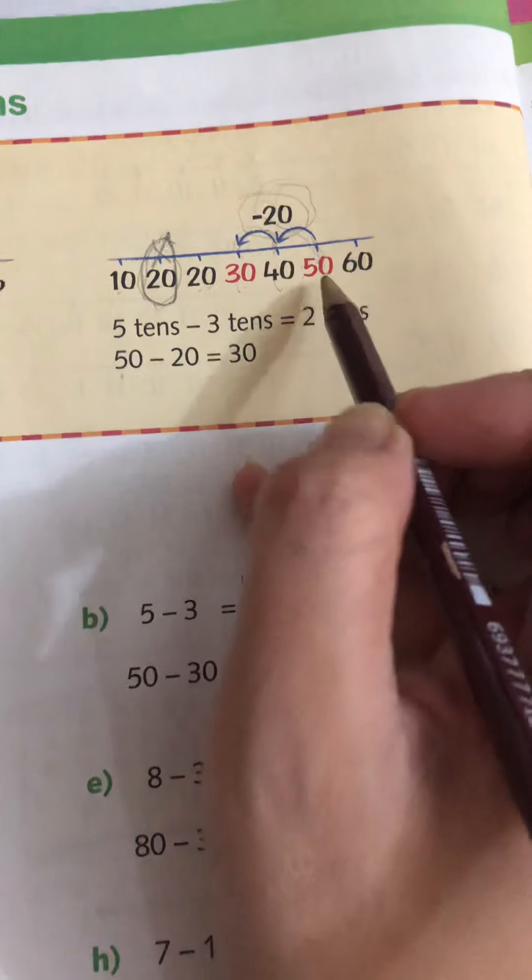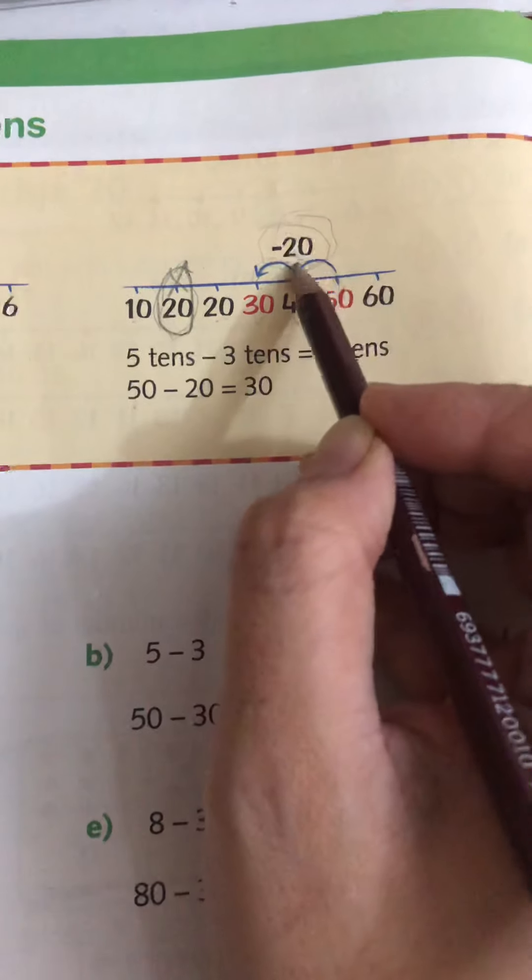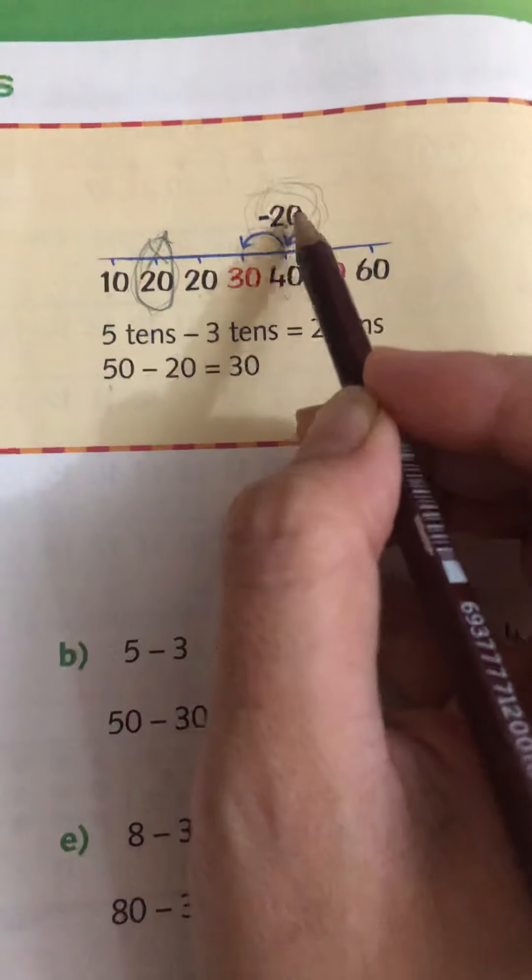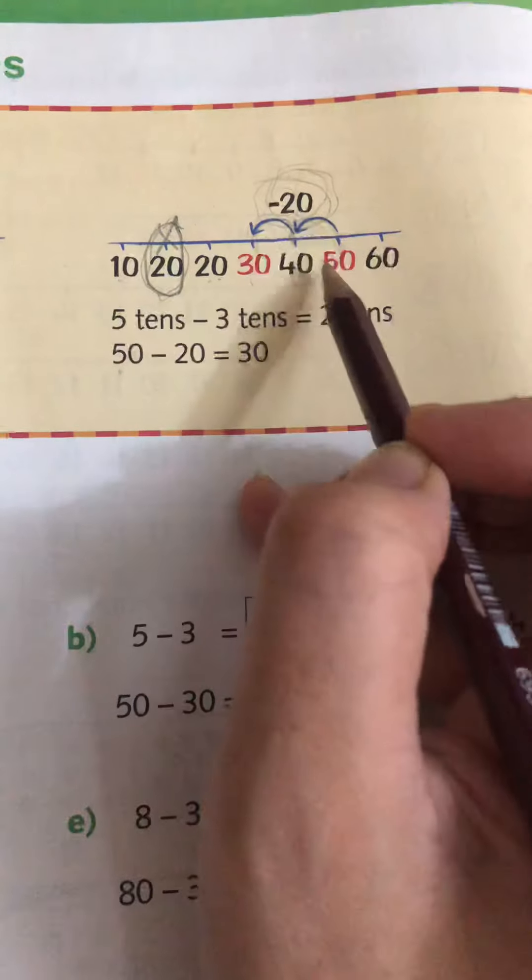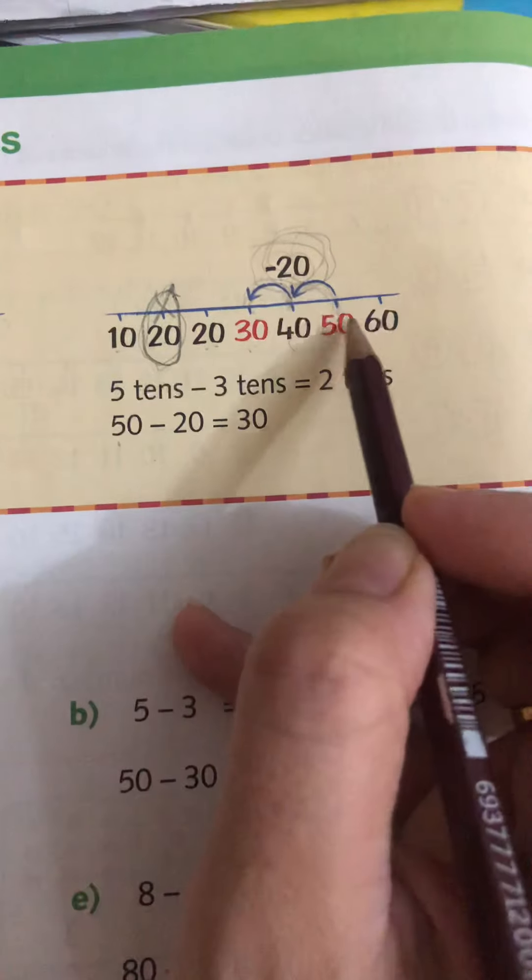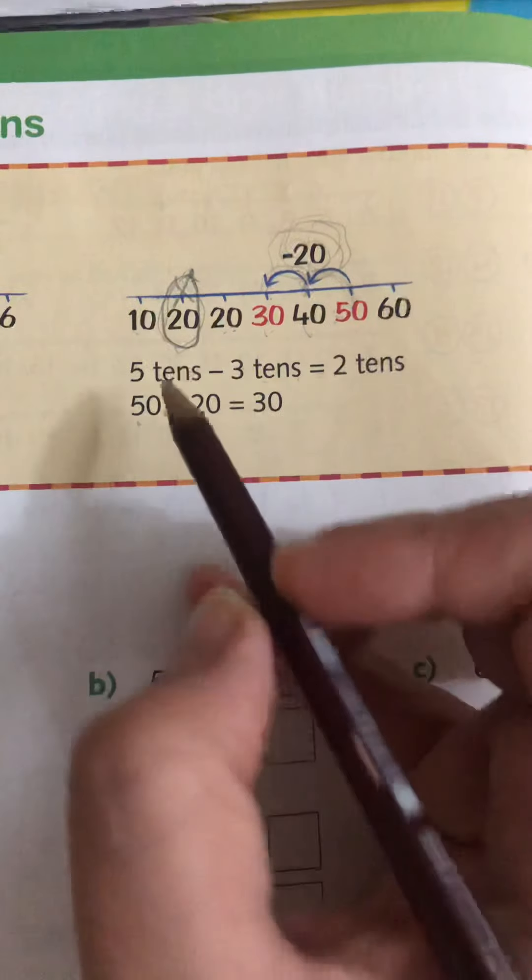So this is counting in tens. When we do backward counting from 50 and then minus 20, we do 2 jumps because we are doing tens. This is not units. So 50 minus 20, the answer is 30. So 5 tens minus 3 tens equals 2 tens.